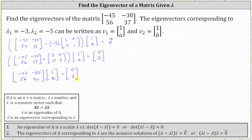Notice for this example there is only one variable. So for the next step let's write the corresponding system of equations. The first equation is negative 42 times 1, or negative 42, plus negative 30 times A, or minus 30A, equals 0. The second equation is 56 times 1, or 56, plus 40 times A, or plus 40A, equals 0. We could stop at either equation and solve for A, but let's go ahead and show both.